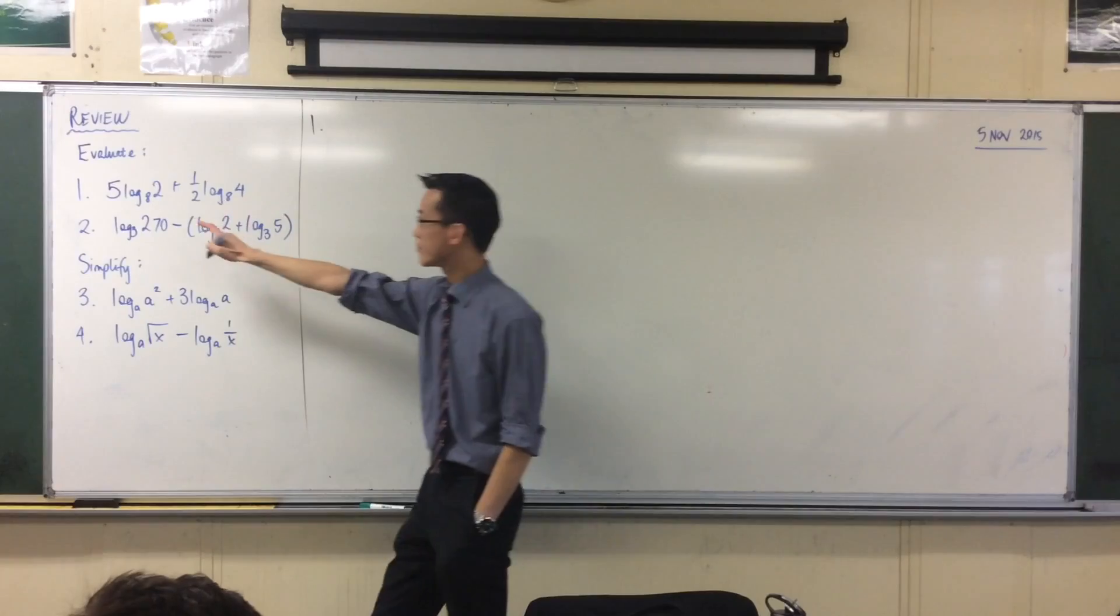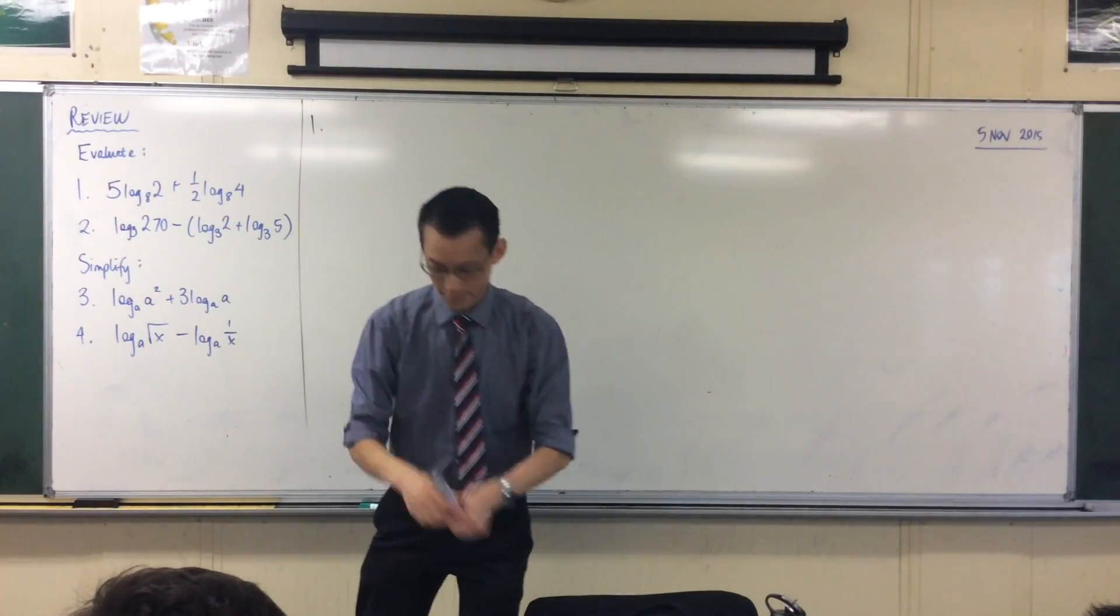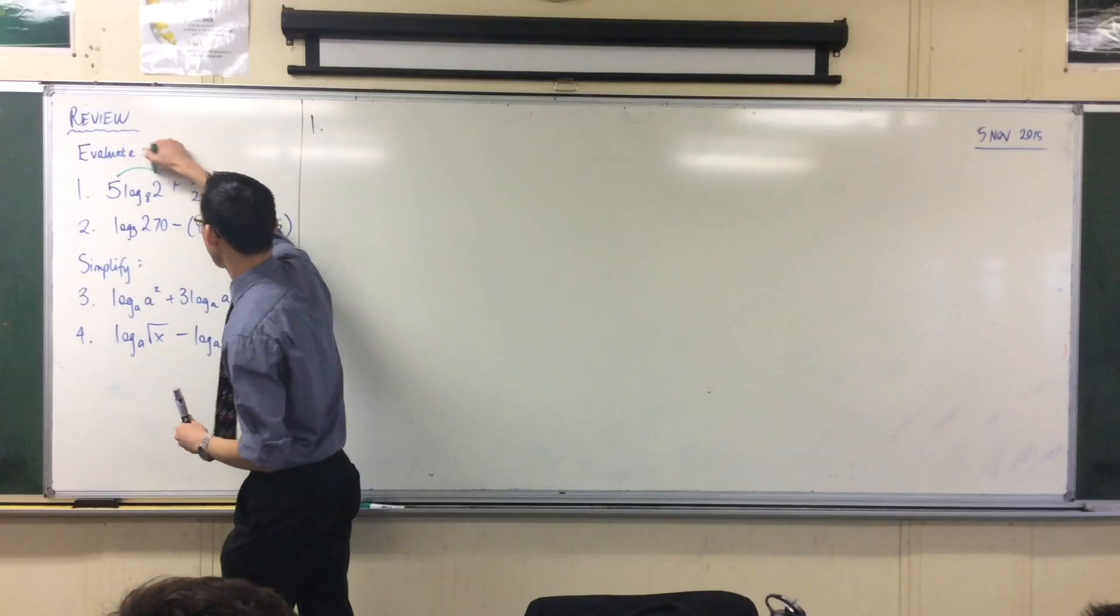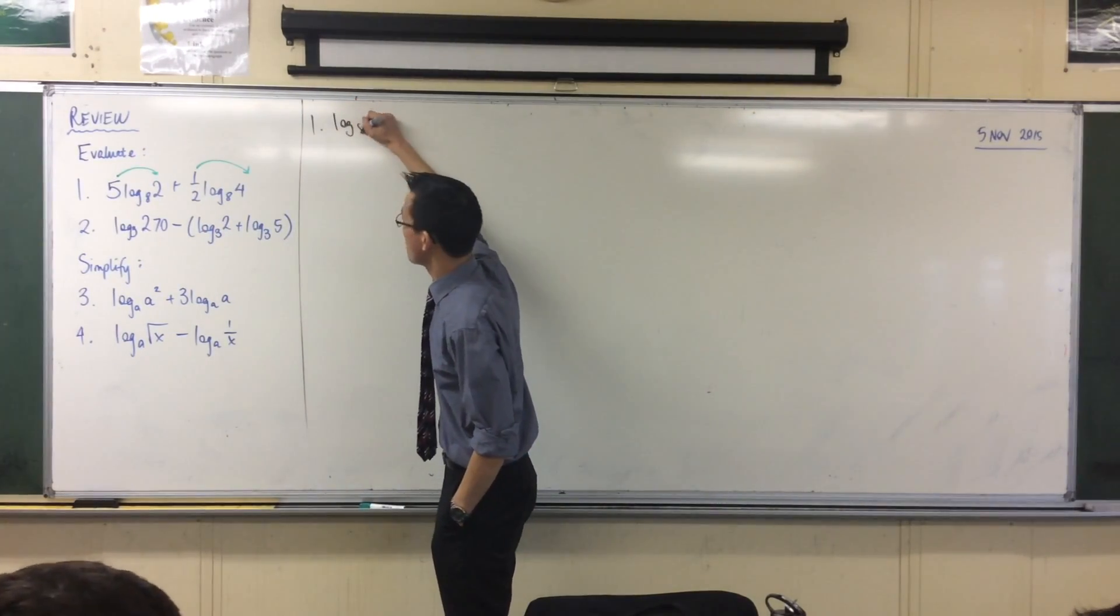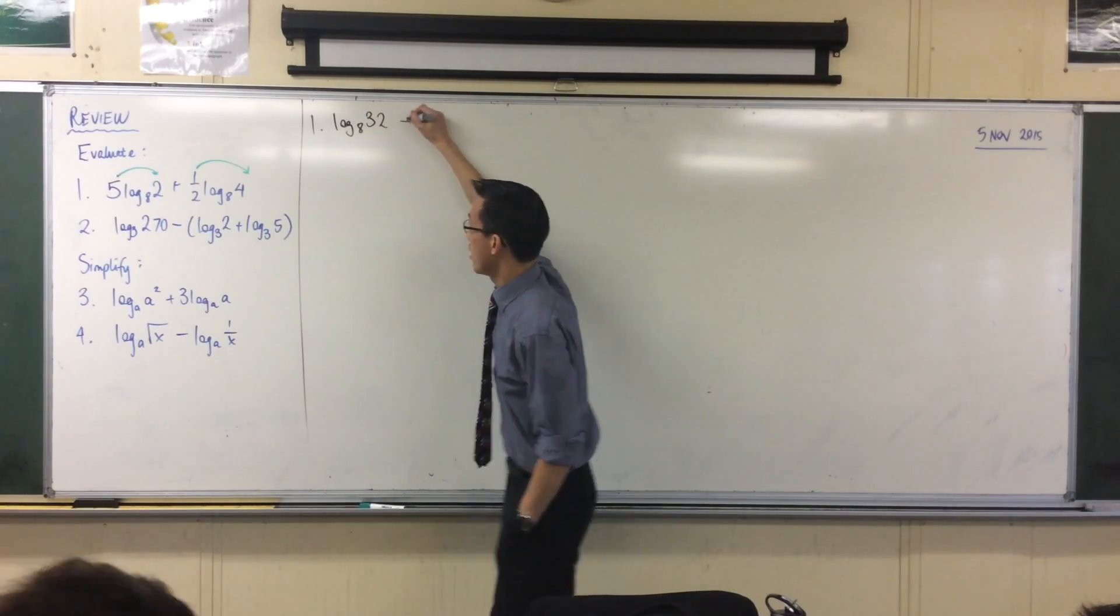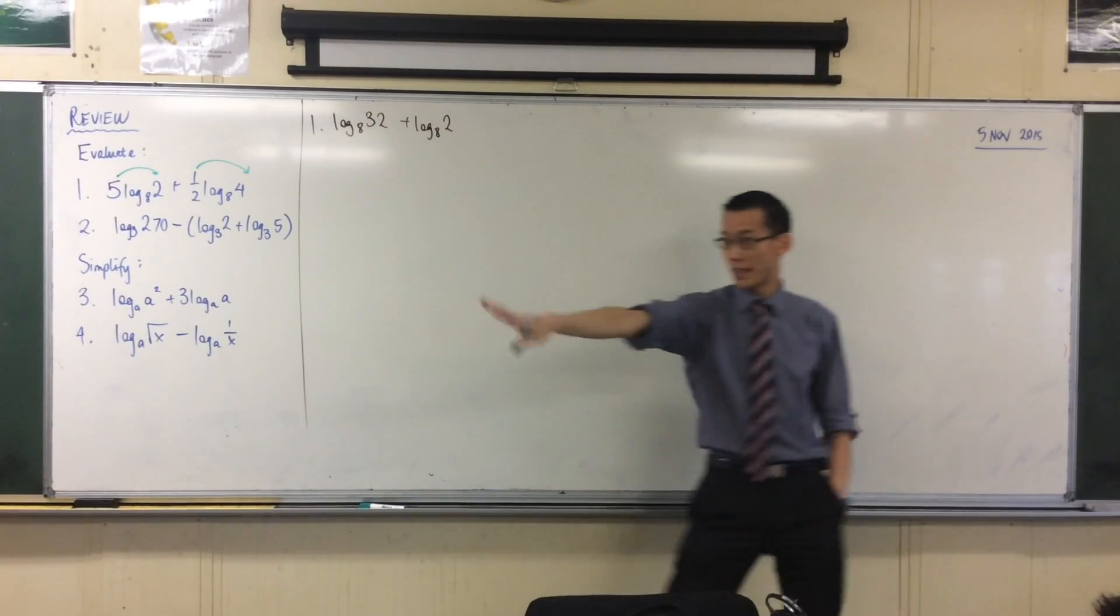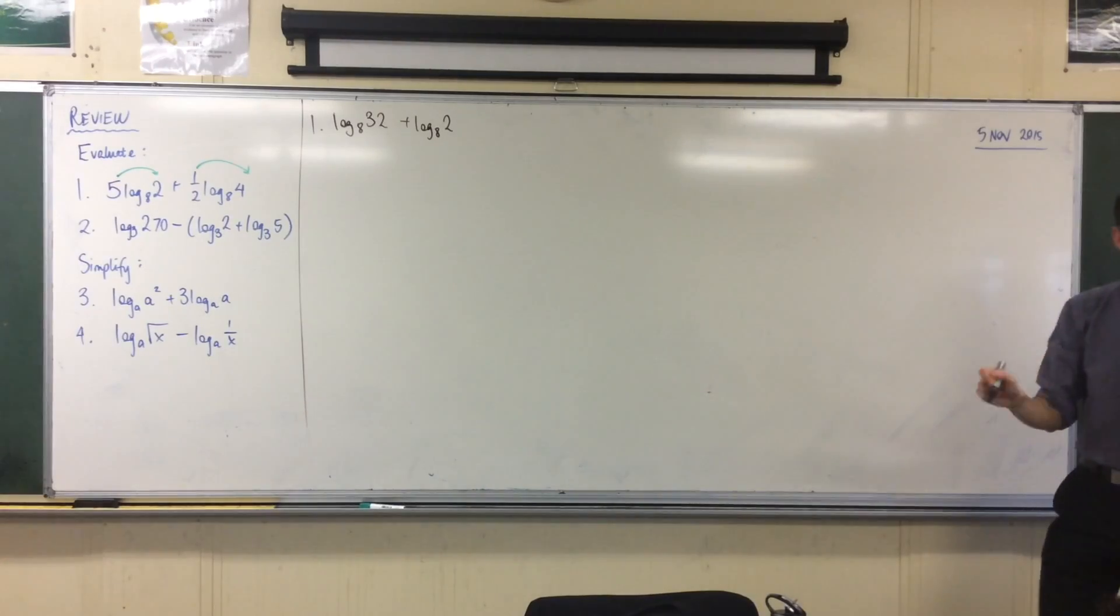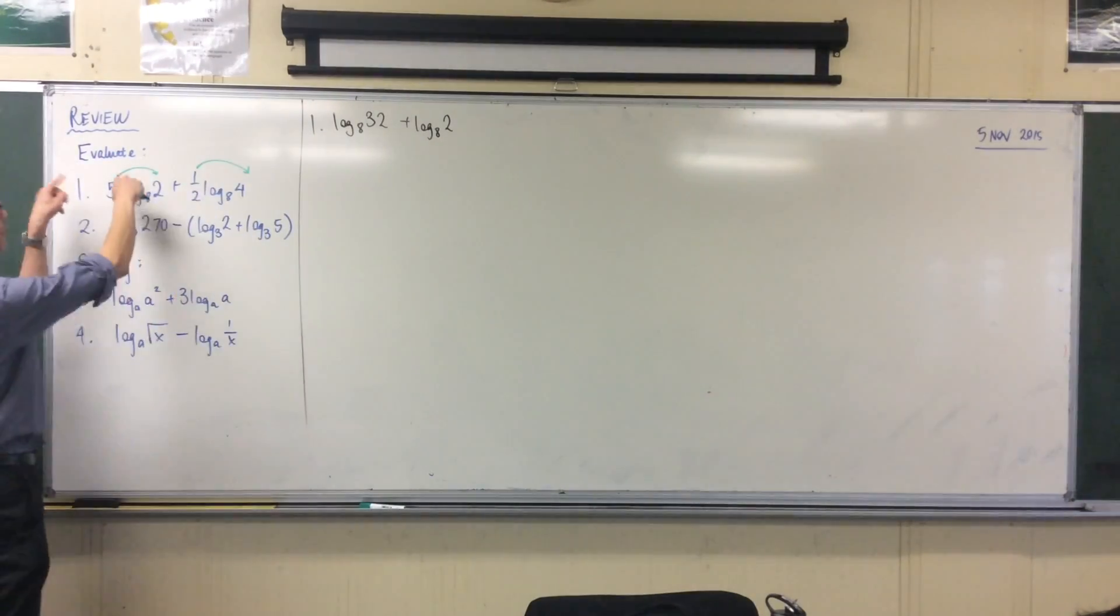We move the 5 and the half back, so it will be 2 to the power of 5, which is 32. Okay, so I'm going to move that up here and that up there. So you're saying I'm going to have log base 8 of 32 and log base 8 of 2, excellent. Good, thank you. Who wants to give me a next step? Where do we go from here? Because we've used the power law, we've used it twice to bring them in front.